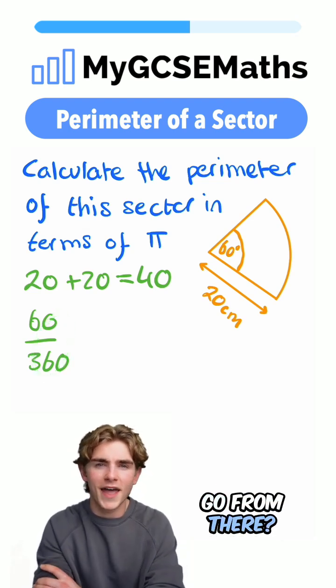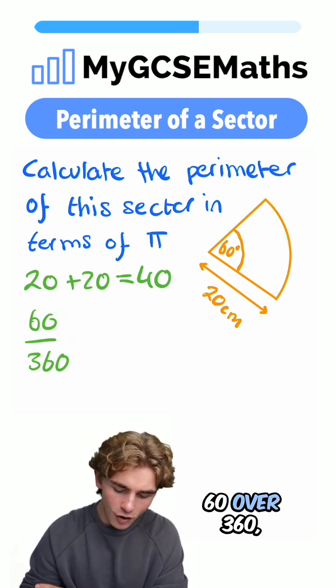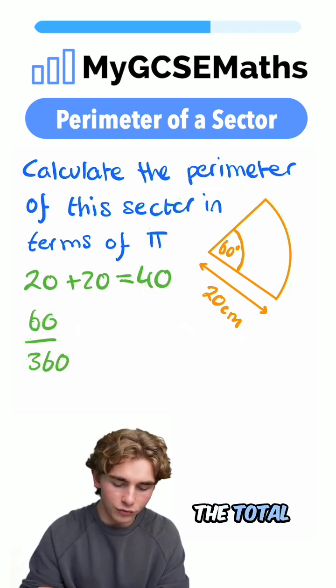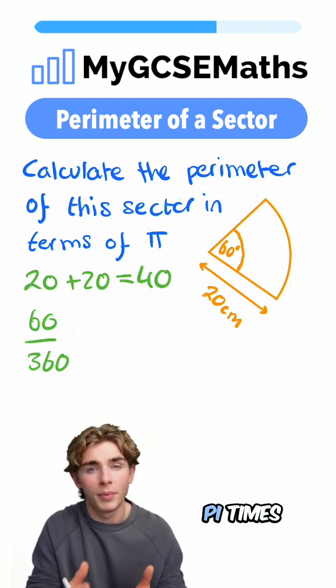Now, where can we go from there? We need to work out this side length here. We have 60 over 360 lots of the total circumference. The total circumference of a circle, that's equal to pi times the diameter.